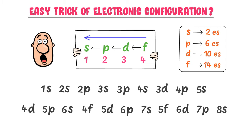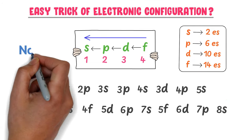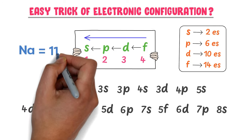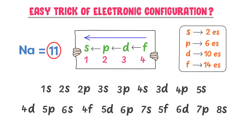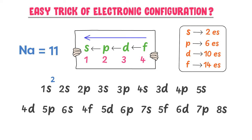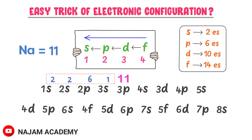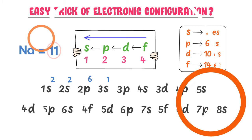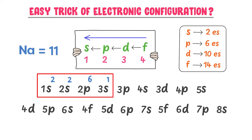So using this trick, I challenge you that you can easily do the SPDF electronic configuration of any element. For example, consider sodium. We know that the atomic number of sodium is 11, so we will distribute the 11 electrons according to this rule. 1S accommodates 2 electrons, 2S accommodates 2 electrons, 2P accommodates 6 electrons, and 3S accommodates 1 electron. 2+2+6+1 equals 11. This is the SPDF electronic configuration of sodium. The last electron of sodium is in an S orbital, so sodium is also called an S block element.